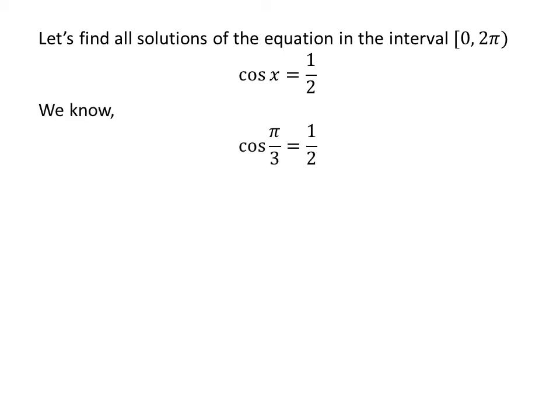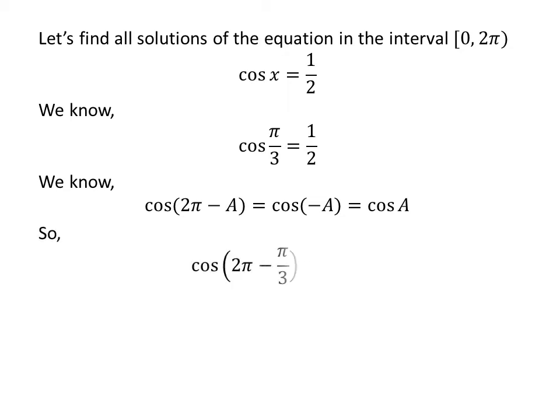We know the value of cosine of π/3 is one half. Since cosine repeats after 2π, and using the identity cosine(2π − a) = cosine(−a) = cosine(a), we get cosine(2π − π/3) = cosine(π/3). Since 2π − π/3 = 5π/3, cosine of 5π/3 is also equal to one half.